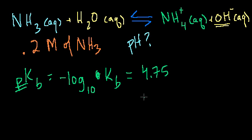And they give that as being 4.75. So we can just do a little bit of math here to solve for the equilibrium constant. So let's see. If we multiply both sides by a negative, you get log base 10 of our equilibrium constant for this base reaction.